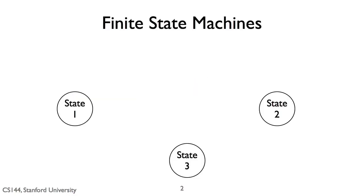As the name suggests, a finite state machine is composed of a finite number of states. A state is a particular configuration of the system. I'm going to start with an abstract example. In this example, we have three states: State 1, State 2, and State 3. So our system can be in one of these three states.